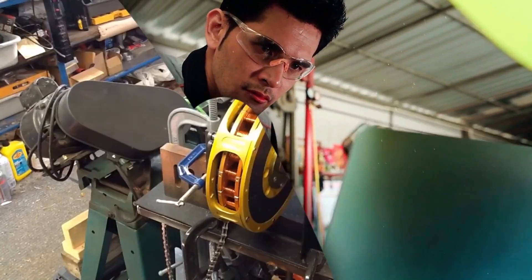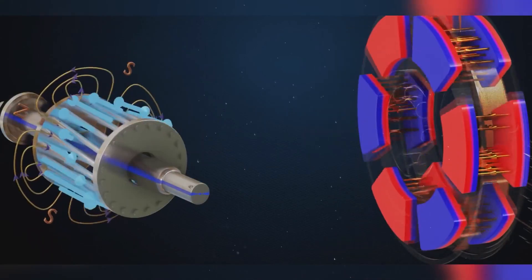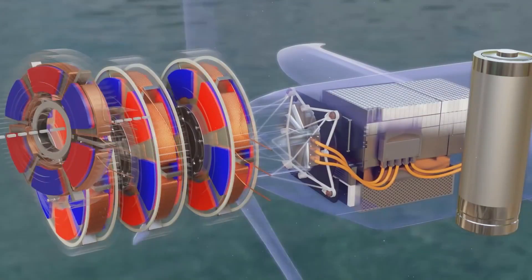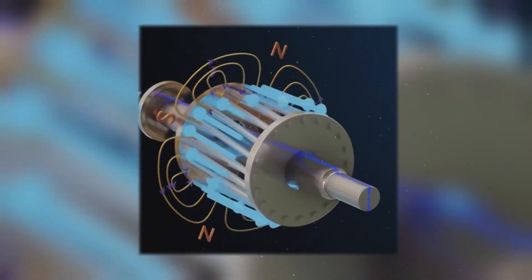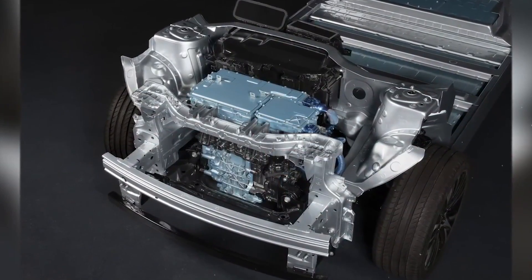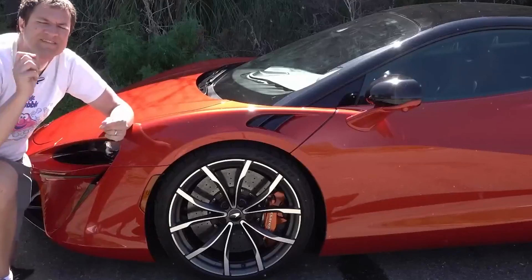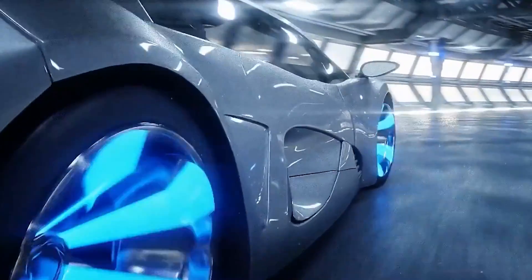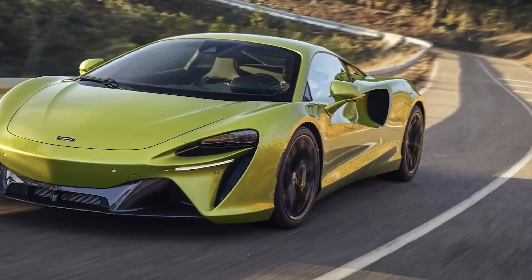But what's better, radial or axial? I hear you shout from your screen. As we've established, radial and axial flux motors are two different designs of electric motors, and they differ primarily in the arrangement of their components and the path of magnetic flux within the motor. So let's explore the key differences between the two.